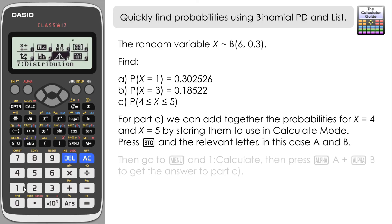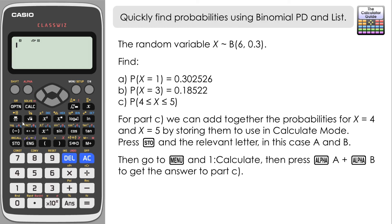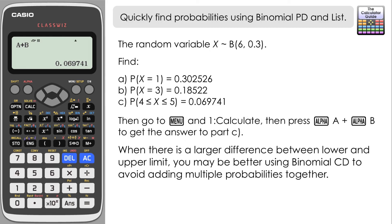And if you go to calculate, so menu and 1. Now I'm just going to recall those figures, so it's alpha A plus alpha B to add the probabilities of 4 and 5 together. And there we go. That equals 0.069741. That's our answer to part C. The probability of x being greater than or equal to 4 or less than or equal to 5.